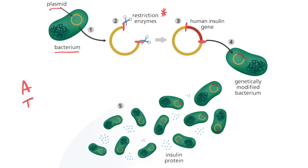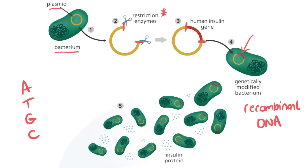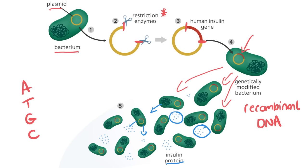So once we have inserted the human insulin gene, we insert that plasmid back into the bacterial cell. As we can see here, it's now what we call genetically modified. Another word you might see in your textbook is recombinant DNA, which is another word for that plasmid because it's recombined. Then we allow that bacteria to multiply — it goes off and makes hundreds and hundreds of copies of itself. Every time it copies itself, it reads the plasmid DNA and makes protein. You can see the insulin protein being made and secreted. The bacteria reads the DNA from its plasmid and starts making human insulin, secreting it on the outside.